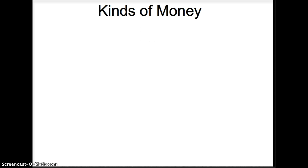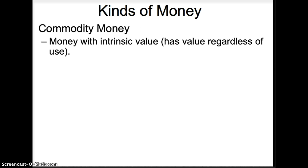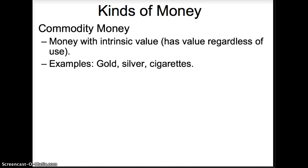There are two kinds of money. Commodity money is money with intrinsic value, meaning it has value regardless of use. Examples of commodity money are gold, silver coins, and cigarettes. Gold, silver, and cigarettes can be used as money or also have alternative uses.